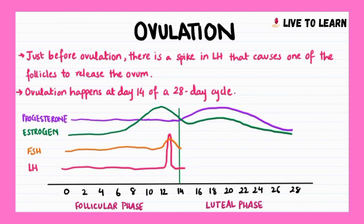LH spikes just before ovulation. Progesterone doesn't really have a role during the follicular phase, but during the luteal phase, both progesterone and estrogen rise to help thicken and maintain the endometrium for implantation.